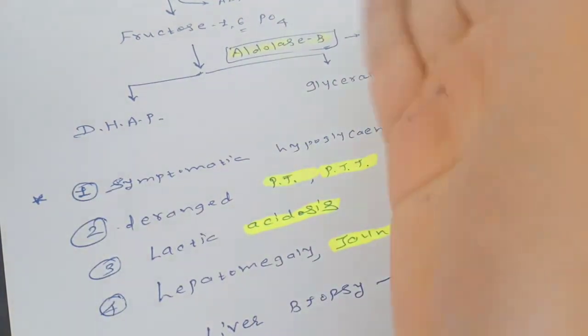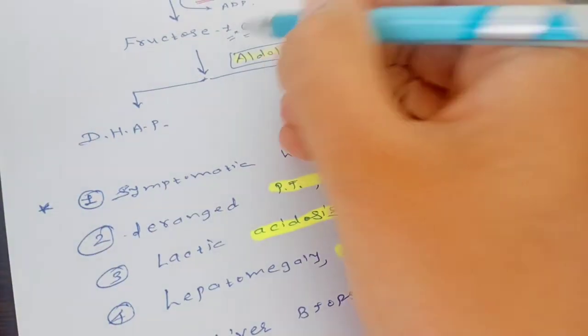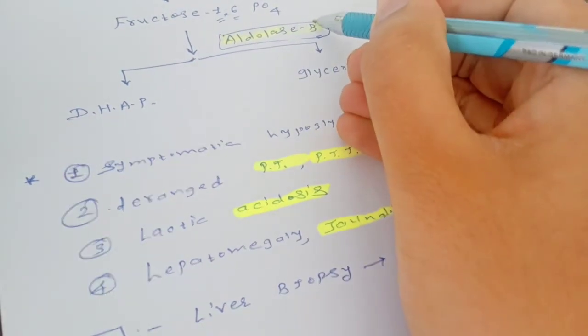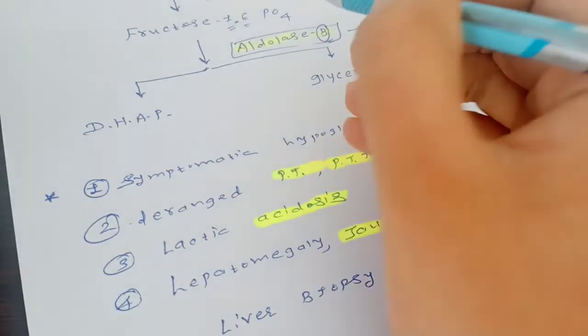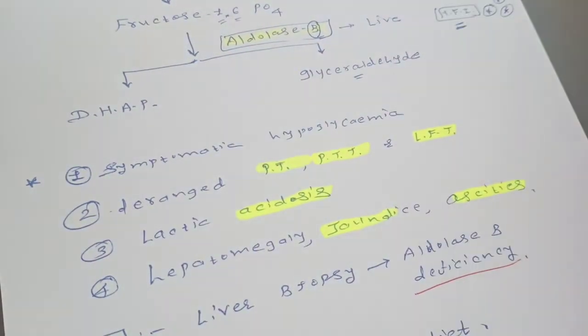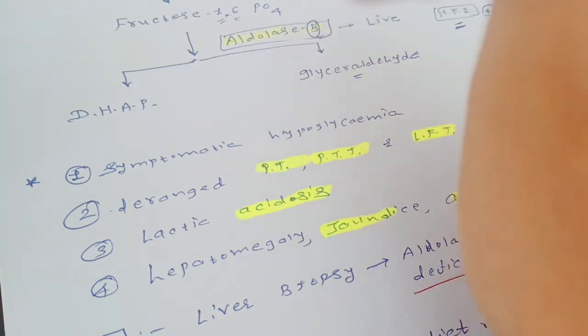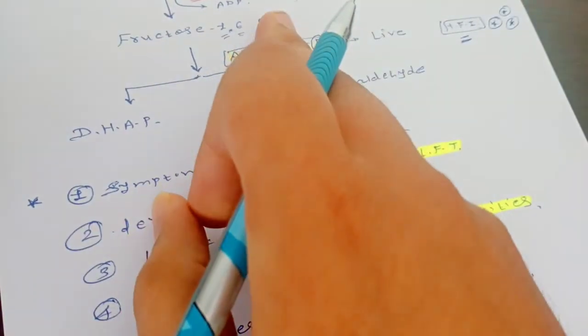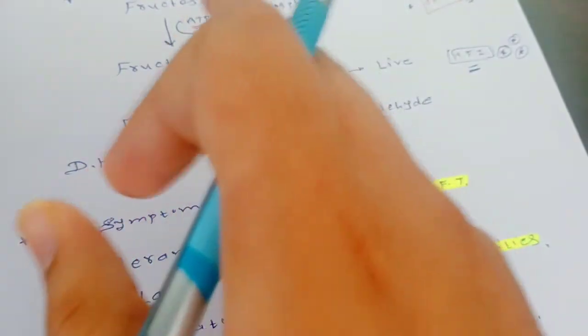Why the name is given B? Because it is present in liver. All other aldolase enzymes produce a division of one large product. So when this enzyme is deficient, the fructose-1,6-phosphate up to this step will be formed. So what occurs? Whenever we ingest the fructose, ATP will be depleted to ADP.